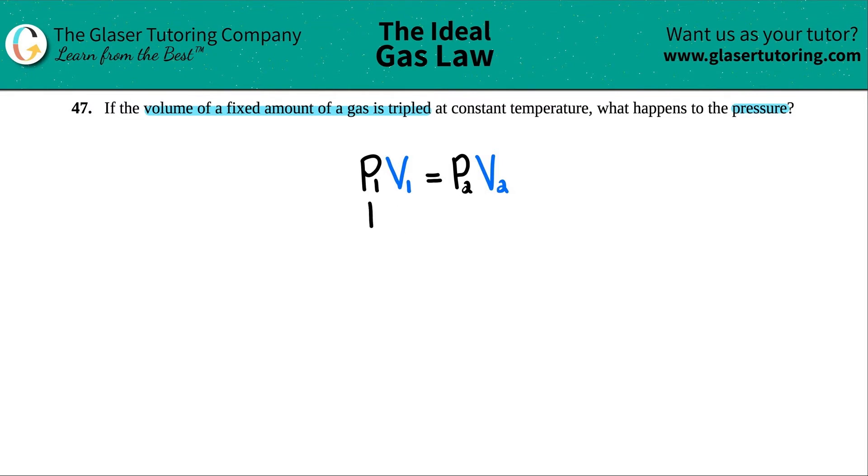Vice versa, if I decrease the pressure, the volume has to increase. Remember, any time you see two variables that are on the same side of the equal sign and they're on the same numerator, that's an indirect relationship. These are indirectly related. If one goes up, the other one's got to go down.